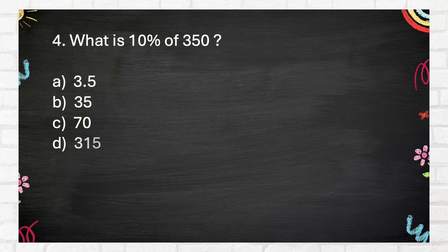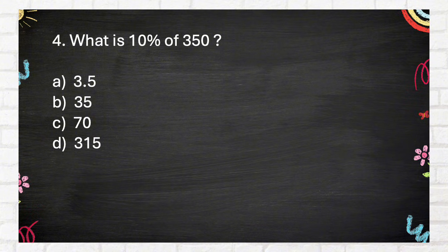Number 4. What is ten percent of three hundred and fifty? A. Three-point-five. B. Thirty-five. C. Seventy. D. Three hundred and fifteen.